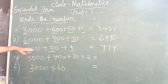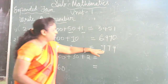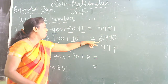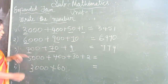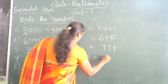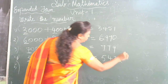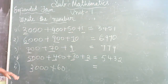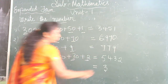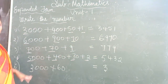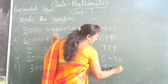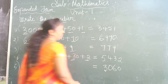Here we have hundreds, tens, and thousands. For example, 5000 plus 400 plus 30 plus 2 — the short form is 5432. And for 3000 plus 0 hundreds plus 60 plus 3 — the hundred place is 0, so write 3063.